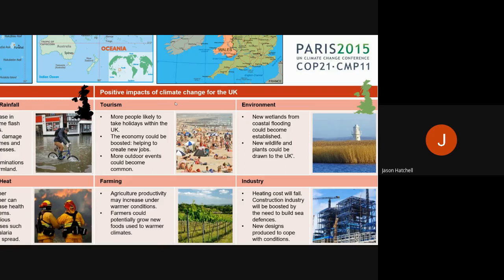Another positive impact for the UK is environmental. Wetlands along the coastlines can be established due to coastal flooding — areas where the sea has taken over. While flooding happens, what's created are new wildlife sanctuaries for plants and animals, drawing new species to the UK. This also links to tourism, as wetlands are visited by tourists quite a lot, and it's good for the natural environment because we gain more diverse species of plants and animals.